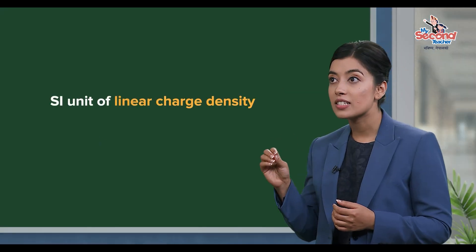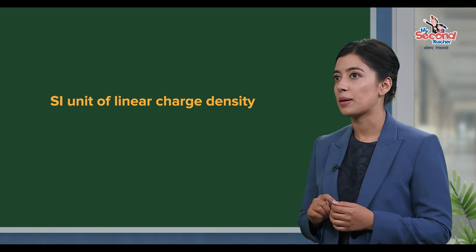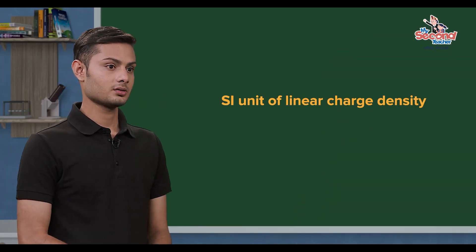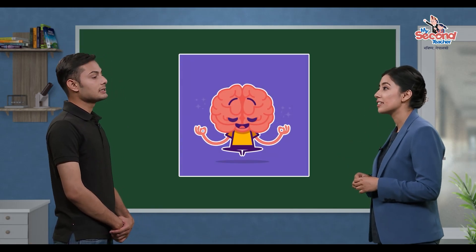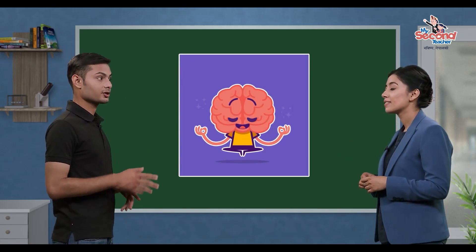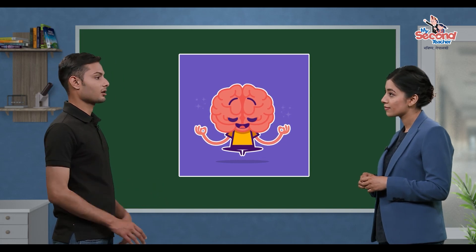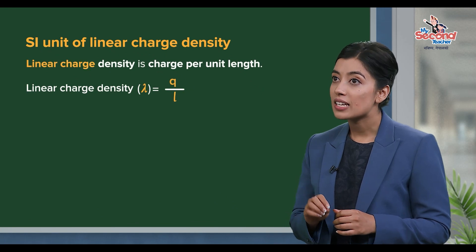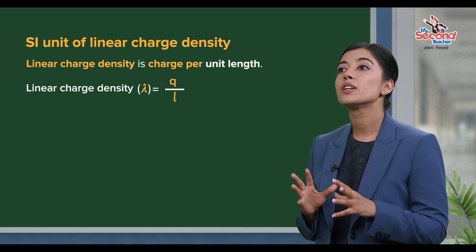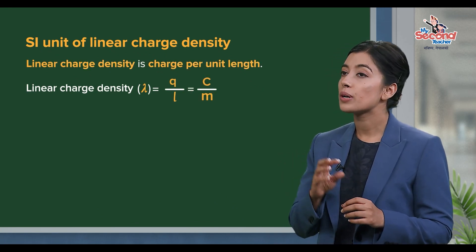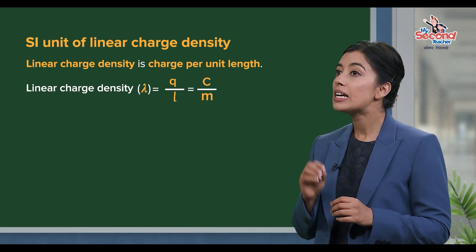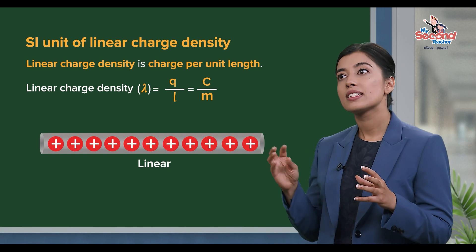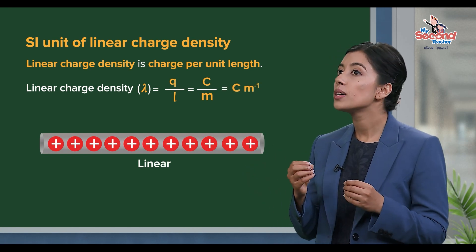What is the SI unit of linear charge density? Linear charge density means charge per unit length. The SI unit of charge is Coulomb, and the SI unit of length is meter. So, the SI unit of linear charge density is Coulomb per meter.